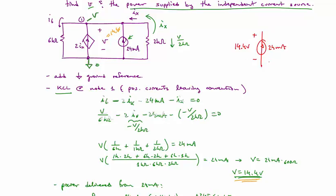active sign convention in this case, is equal to, supplied by source is equal to 24 milliamps times the 14.4 volts, which is 346 milliwatts.